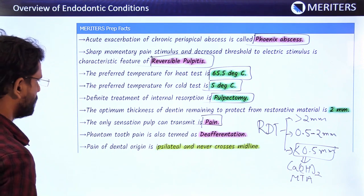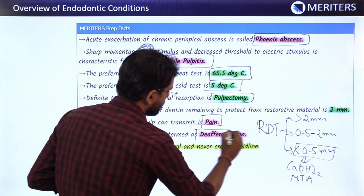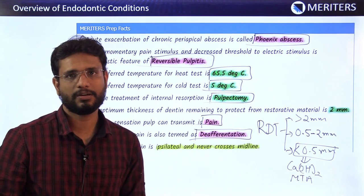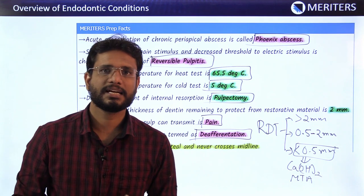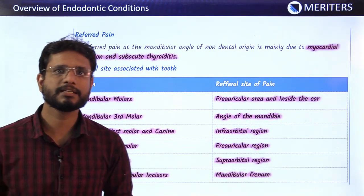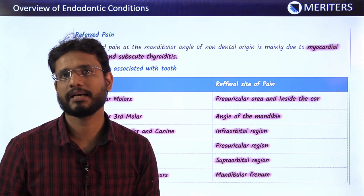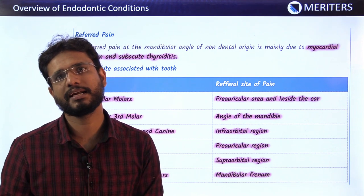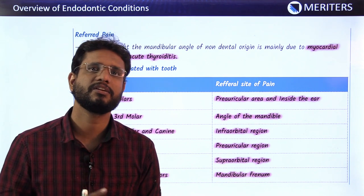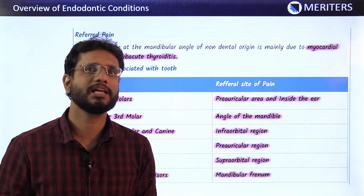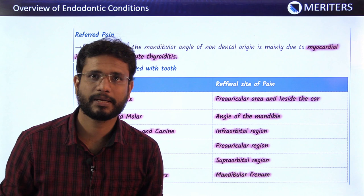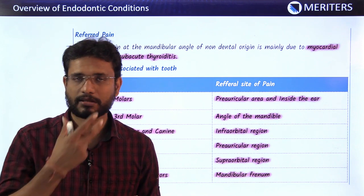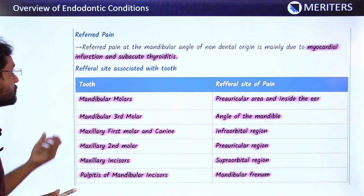Phantom tooth is also known as deafferentation. Pain of dental origin is always on the same side as the pathology and never crosses the midline. Referred pain occurs at a site different from the actual pathology — for example, referred pain of myocardial origin is generally felt in the lower jaw, even though there is no pathology there.